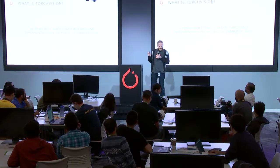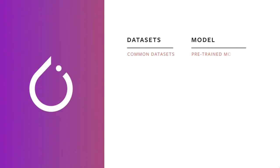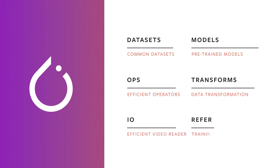TorchVision is a library that is built to help you experiment with computer vision in PyTorch, and there are a number of tools in there that are going to make your life easier for that task. Let's have a closer look — it provides a number of different tools and algorithms to help you bootstrap your research and start right there.